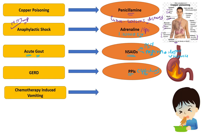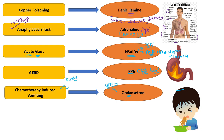For chemotherapy-induced vomiting, we give ondansetron or granisetron. The mechanism is that they are 5-HT3 receptor antagonists — they block the 5-HT3 receptor and the vomiting stops. This applies to both chemotherapy-induced and radiotherapy-induced vomiting. For late vomiting in chemotherapy, we give aprepitant, which is a substance P antagonist.